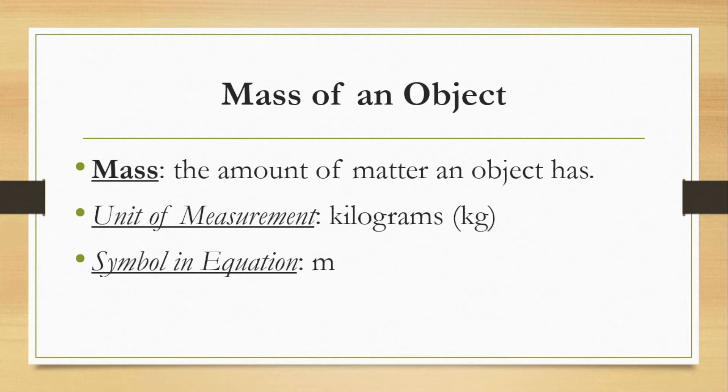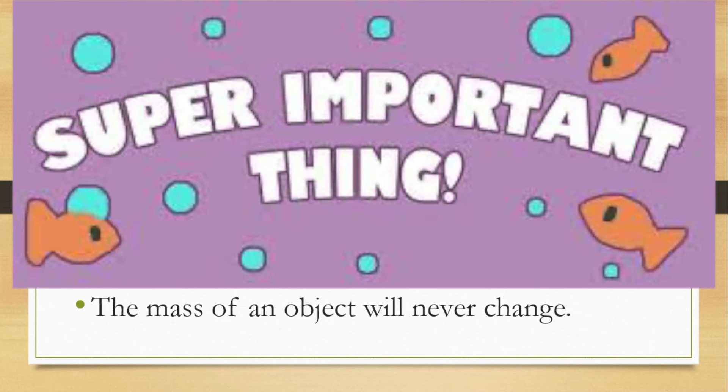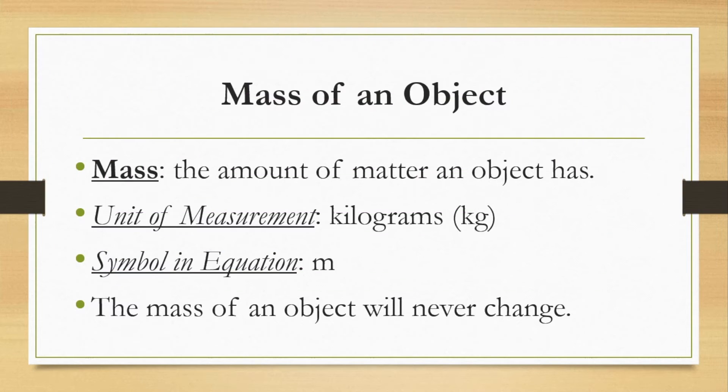The symbol for mass is going to be the lowercase letter M. And the mass of an object will never change. And the reason it's never going to change is because the amount of matter an object has does not change. So for instance, if I were to go to the moon, I would have the same amount of matter or the same atoms in me as I would on earth. And because I have the same atoms as earth, my mass is going to be the same. So mass will never ever change in physics.